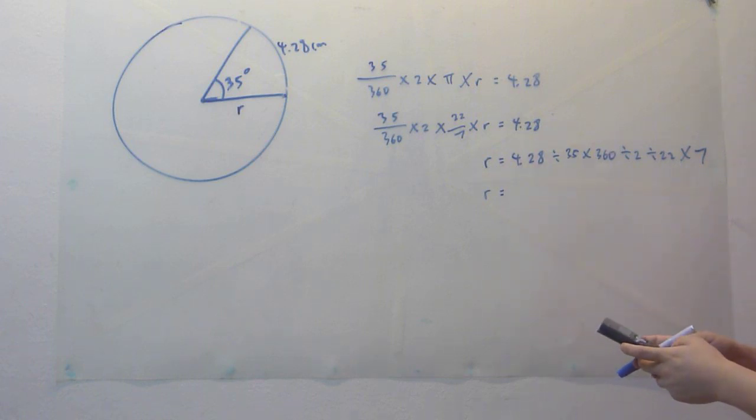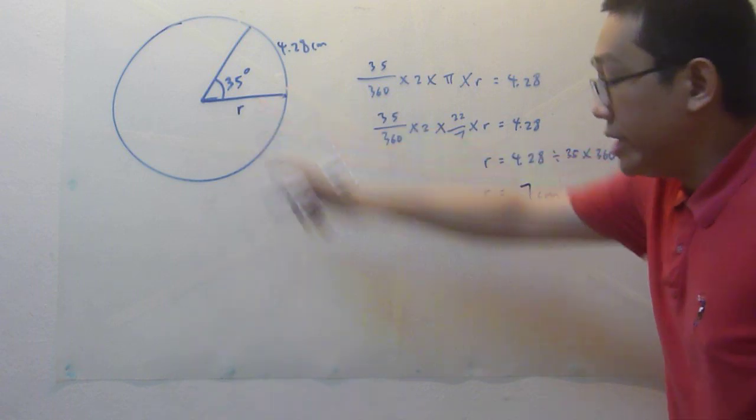So after I calculate this, let's try to calculate the 4.28 divide 35 times 360, divide 2, divide 22 times 7. So I get 7 cm for the radius.